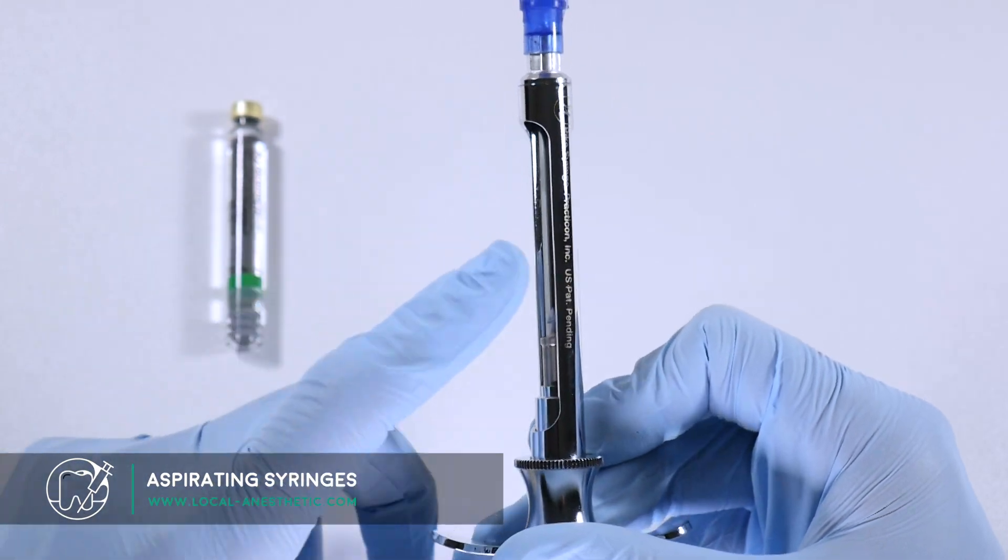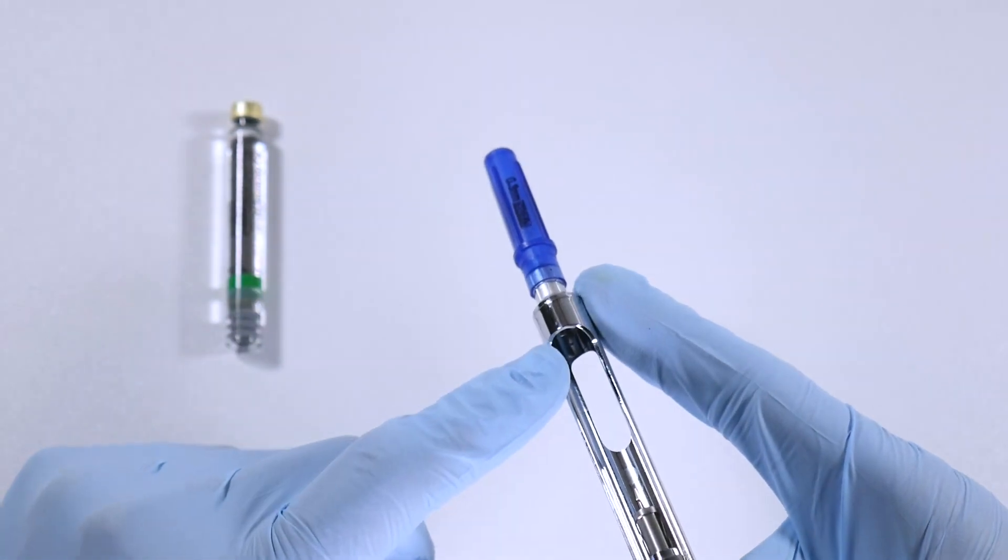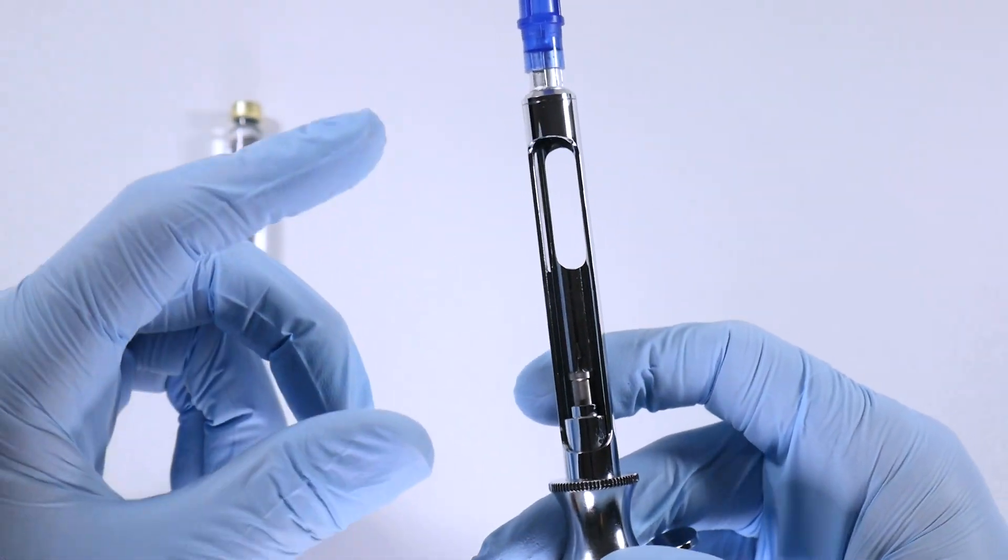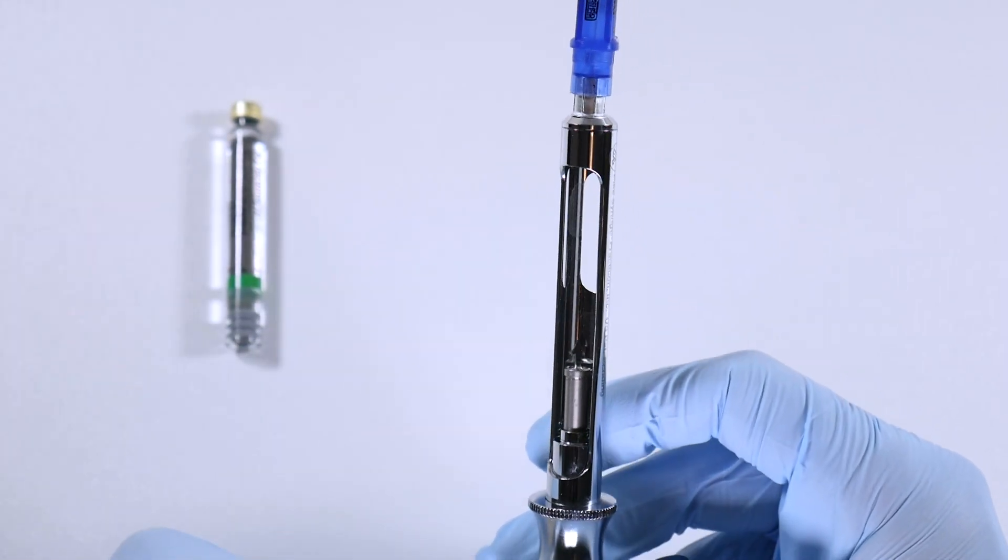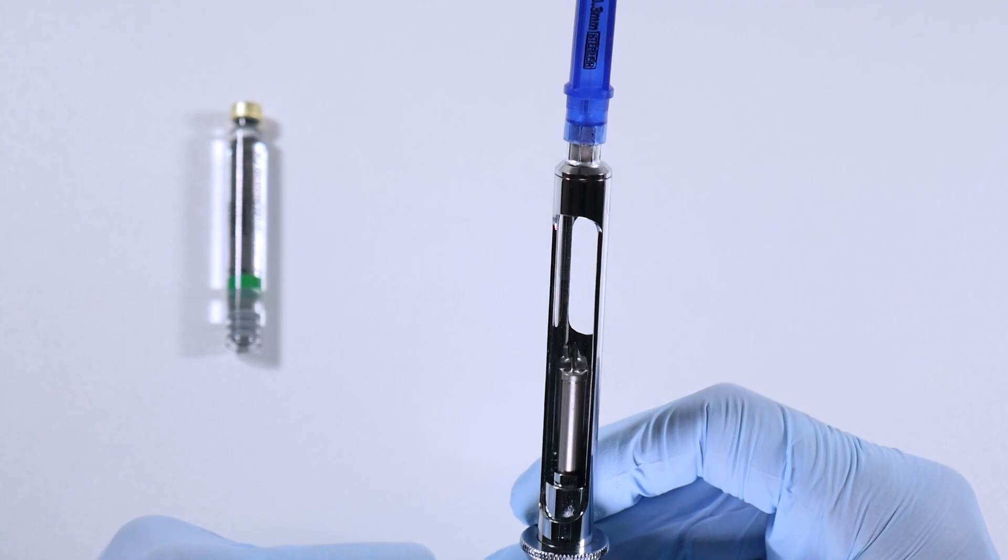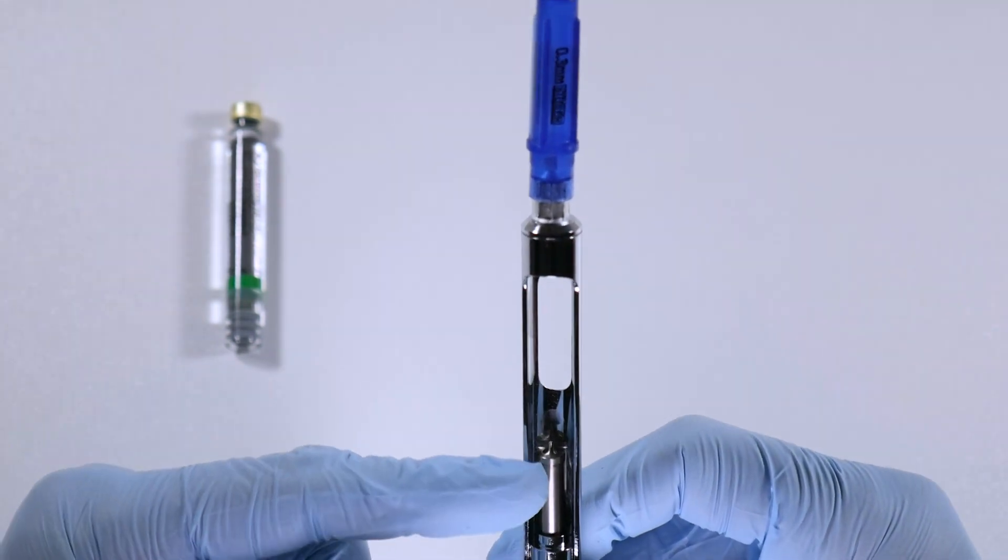use these self-aspirating syringes which have the little nub near the end which aspirate when you let go of the pressure on the plunger. This syringe operates a little bit differently. As you can see, there's this very